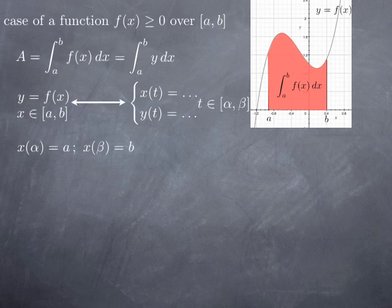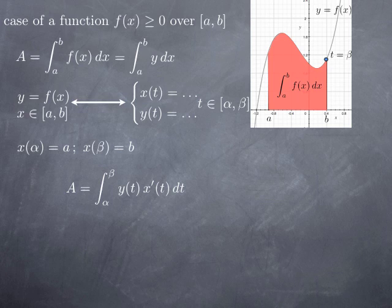We also ask that we traverse the curve exactly once as t increases from alpha to beta. So when t equals alpha, we are on the point corresponding to x = a, and as t increases from alpha to beta, we go over each point on the curve but only once, and for t equal beta we reach b. In that case, we can rewrite our integral: y becomes y(t), and dx becomes x'(t) dt. Integrating against t, when x is a that corresponds to t = alpha, and when x is b that corresponds to t = beta, so we integrate from alpha to beta.